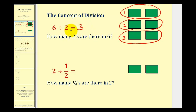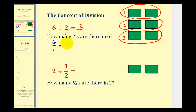However, it is possible to write every division problem as a multiplication problem. Remember we can make two a fraction by putting it over one. So instead of dividing by two, we could multiply by the reciprocal and get the same result. We'll write six as six over one, then change the division to multiplication and multiply by the reciprocal of two over one, which is one over two.